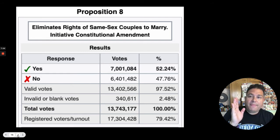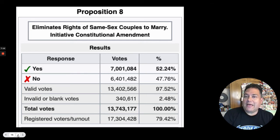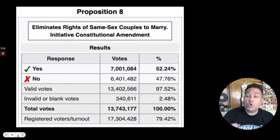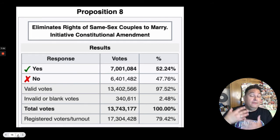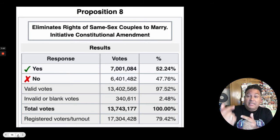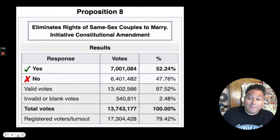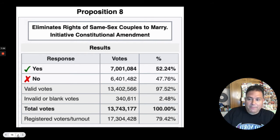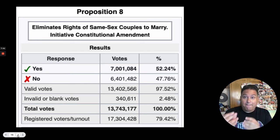California temporarily eliminated the right of same-sex couples to marry until it was overturned by the courts. Ultimately, in the Obergefell Supreme Court case of 2015, same-sex marriage became legal in all 50 states because the Supreme Court said it was denying equal protection under the law and denying people's 14th Amendment rights. All that to say, in a direct democracy the people can vote directly on laws, just like California voters did with Proposition 8. We still have that today in California.